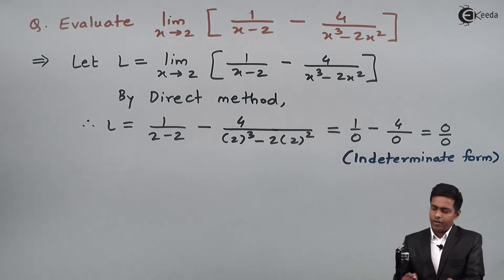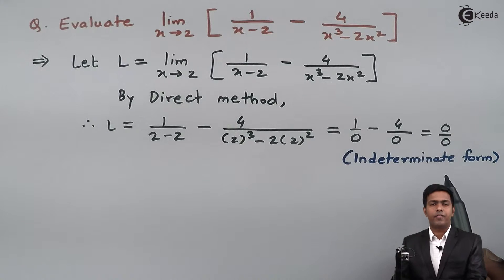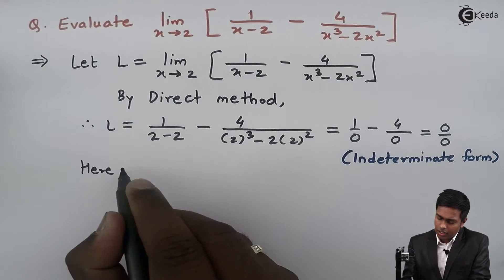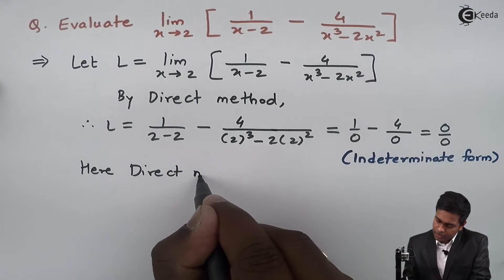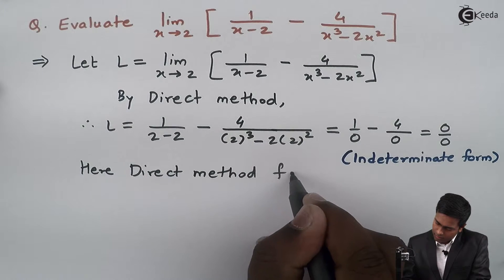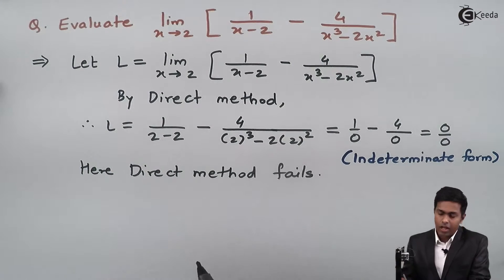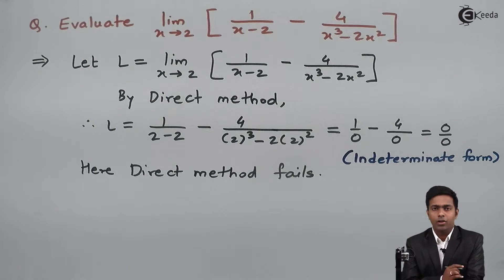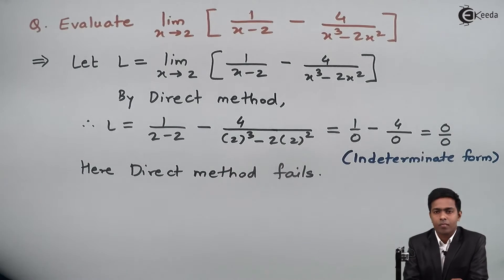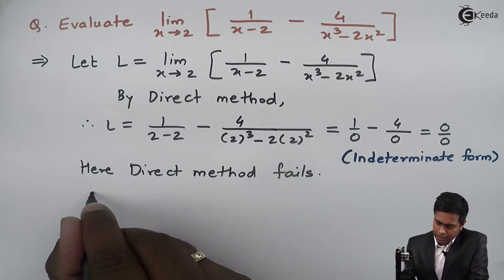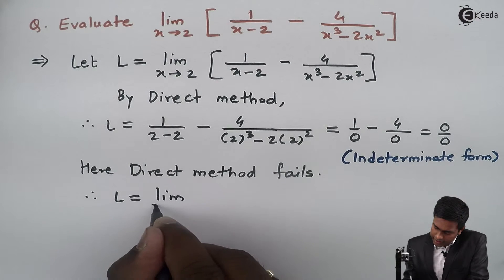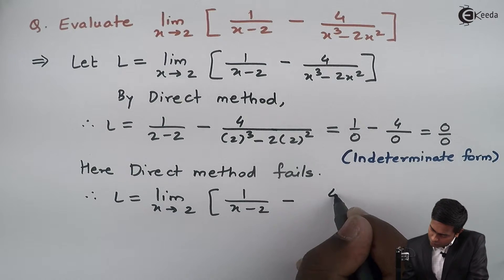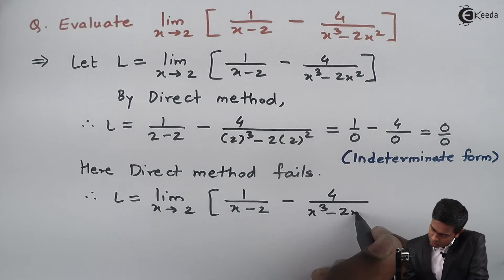Whenever we get 0 upon 0 by direct method, we say the direct method fails. So here direct method fails, and we have to look for some other method. For that reason I will rewrite the given limit: L equals limit x tends to 2 of 1 upon (x minus 2) minus 4 upon (x cubed minus 2x squared).